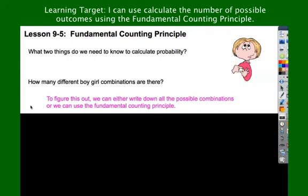In the first half of the chapter, we dealt all with experimental and theoretical probability. We looked at probability as a ratio, which is a comparison of two things. If we ask ourselves, what are the two things we need to know?